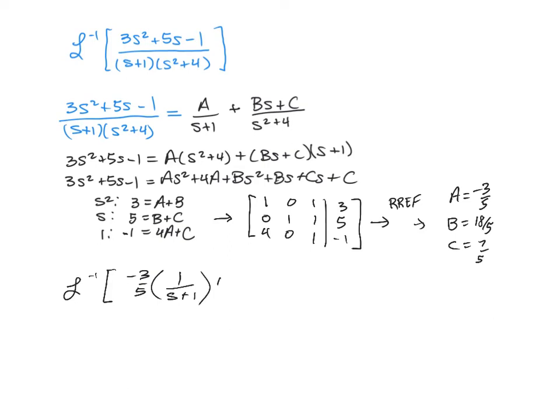Then we're going to have our B, which is 18 fifths, and that's with the s over the s squared plus 4.